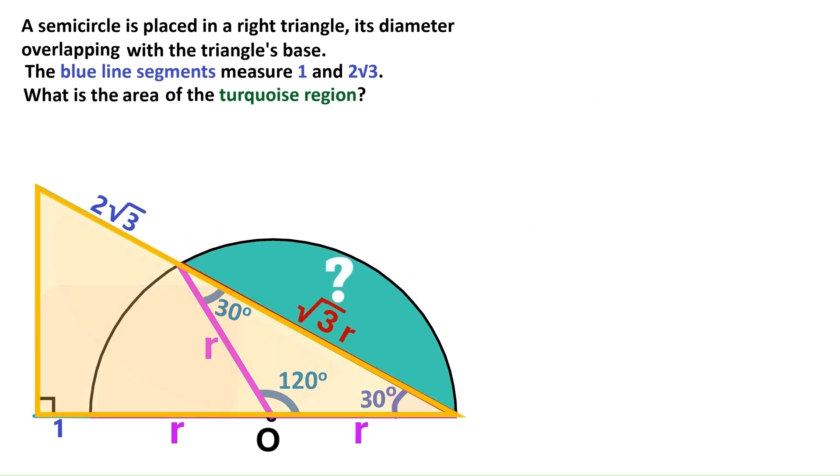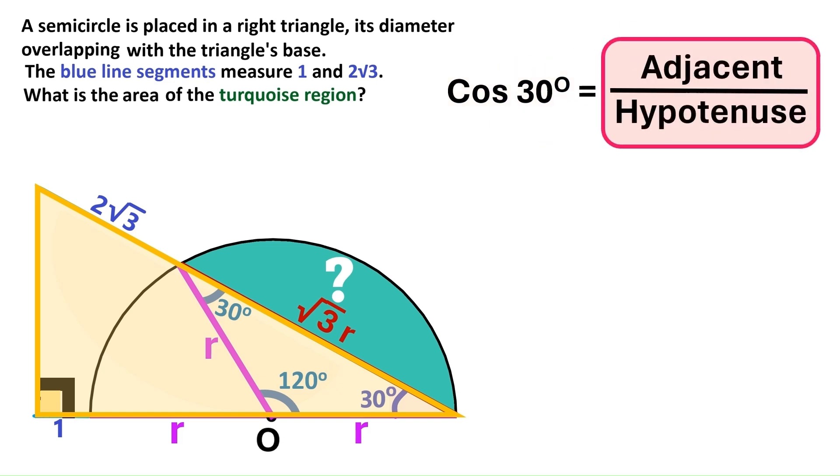It's now time to take a look at this big triangle. It's a right triangle and it's got a 30 degree angle. That means we can use cosine 30 to find its side lens. Cosine of an angle is the adjacent side divided by the hypotenuse. The adjacent side is the shorter side that is next to the angle.